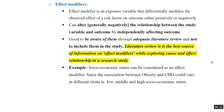We should be aware of effect modifiers through adequate literature review. Effect modifiers should not be included in the study. Literature review is the best source of information on effect modifiers while exploring cause-and-effect relationships. For example, socioeconomic status can be considered an effect modifier, since the association between obesity and coronary heart disease could vary across different strata — low, middle, and high socioeconomic groups.